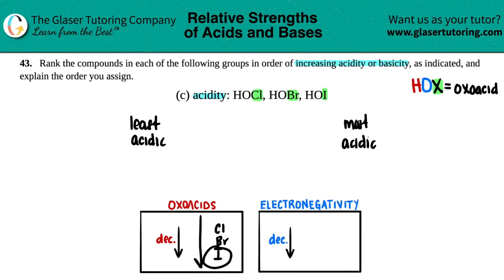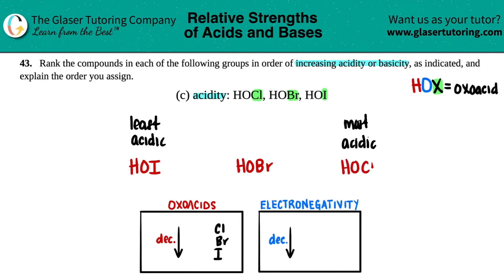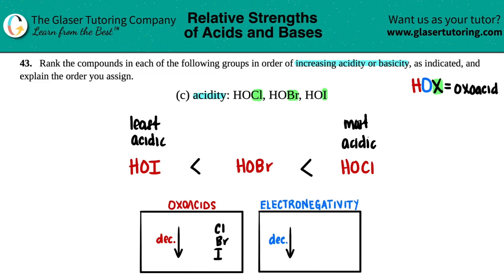As I go down the group, acidity decreases in oxo acids, so chlorine gives the most acidic compound and iodine the least. Therefore the ranking from least to most acidic is: HOI is less acidic than HOBr, which is less acidic than HOCl.